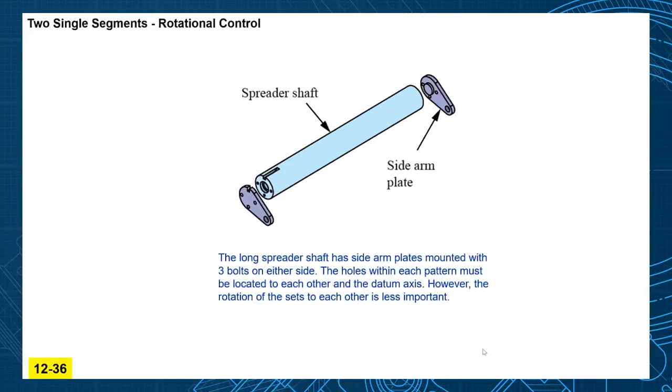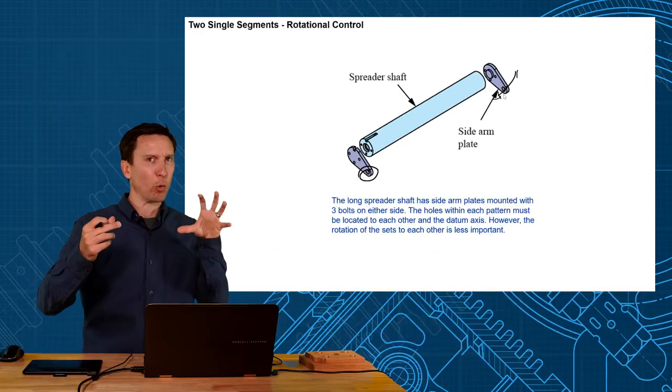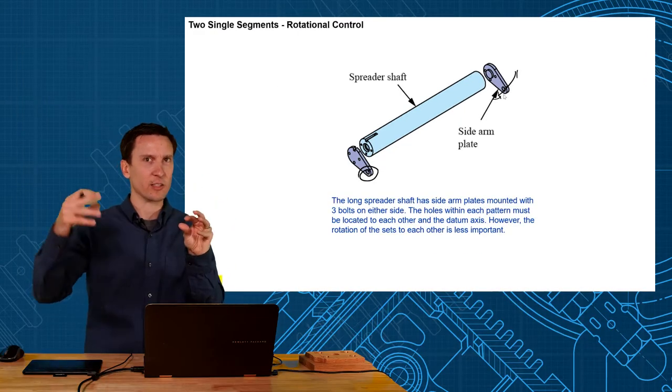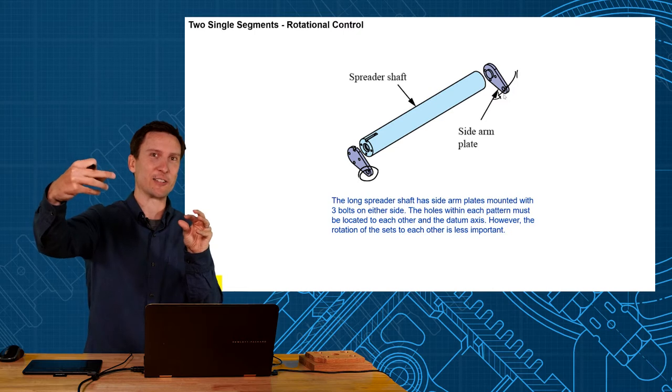This is a made-up part called the spreader shaft, inspired by agricultural equipment where you had a component in purple that you rotate and it pulls on this lever on the other side. Rotationally it doesn't matter so much where the two holes are to each other because of the adjustment in the system, but it is important that this side is related to the axis and the other side also stays on center of the axis.